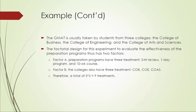The GMAT is usually taken by students from three colleges: the College of Business, the College of Engineering, and the College of Arts and Sciences. The factorial design for this experiment has two factors. Factor A, the preparation programs, has three treatments: three-hour review, one-day program, and 10-week course. Factor B, the colleges, also has three treatments: College of Business, College of Engineering, and College of Arts and Science. As a result, we have a total of nine treatment combinations.